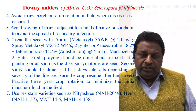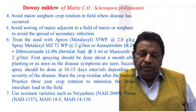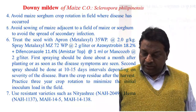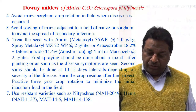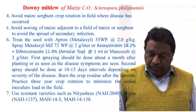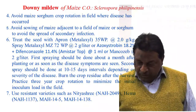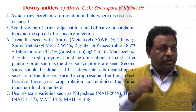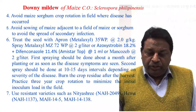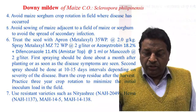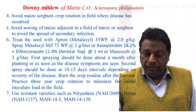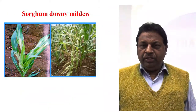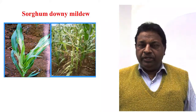Burn the crop residue after harvest. Three years of crop rotation also helps in minimizing this disease. Use of resistant varieties such as Hema and Nityashri are also reported as resistant material against Downy Mildew of maize. This is all about maize diseases and their management. Thank you.